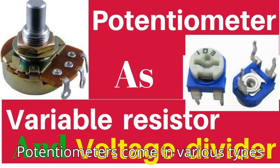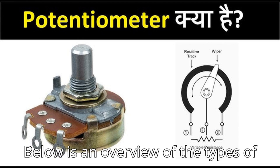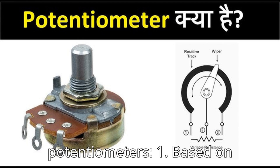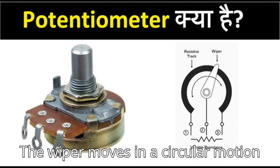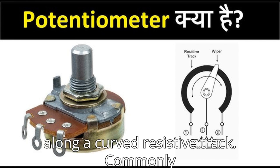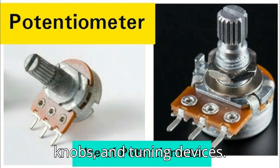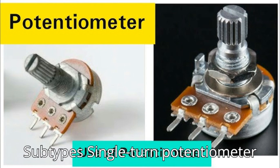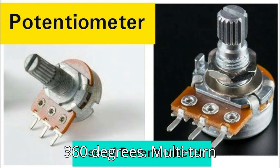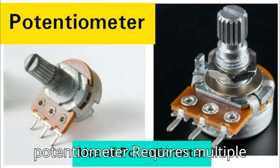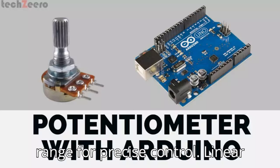Potentiometers come in various types based on their construction, functionality, and mode of operation. Based on construction: the rotary potentiometer has a wiper that moves in a circular motion along a curved resistive track, commonly used in audio equipment such as volume knobs and tuning devices. Subtypes include the single-turn potentiometer, where the wiper completes a single rotation up to 360 degrees, and the multi-turn potentiometer, which requires multiple rotations to traverse the full resistance range for precise control.